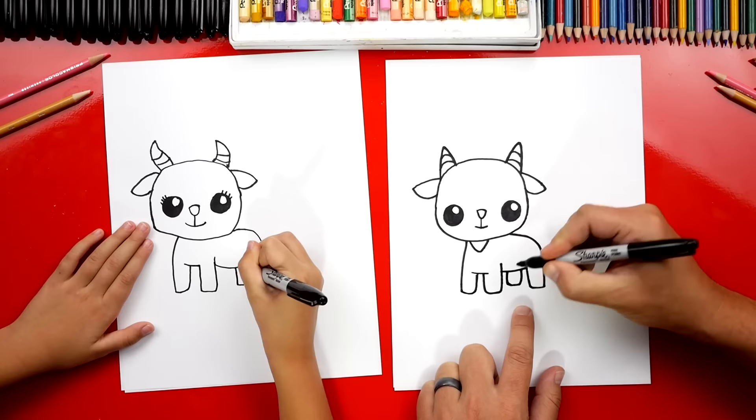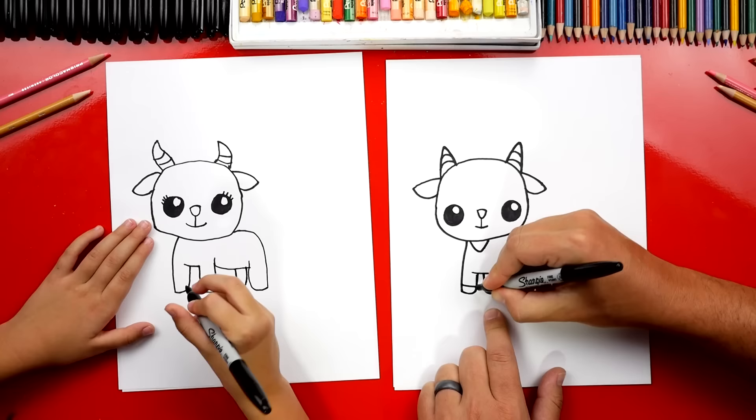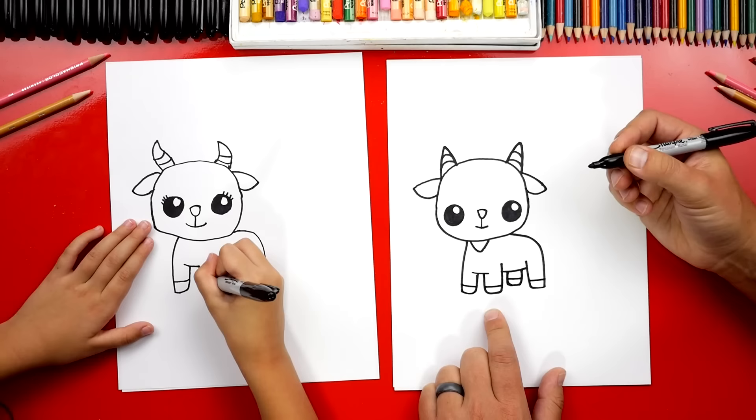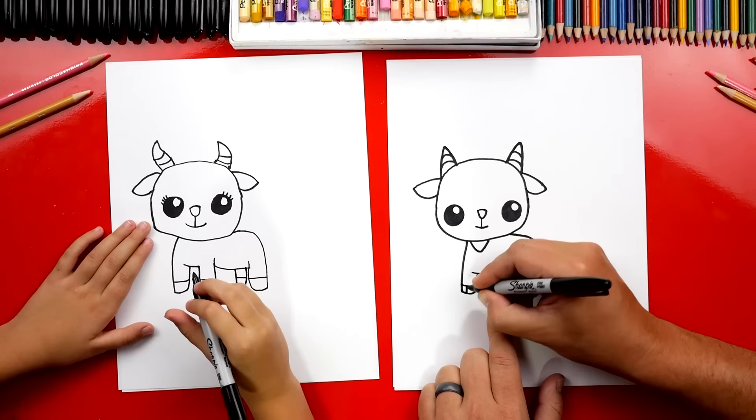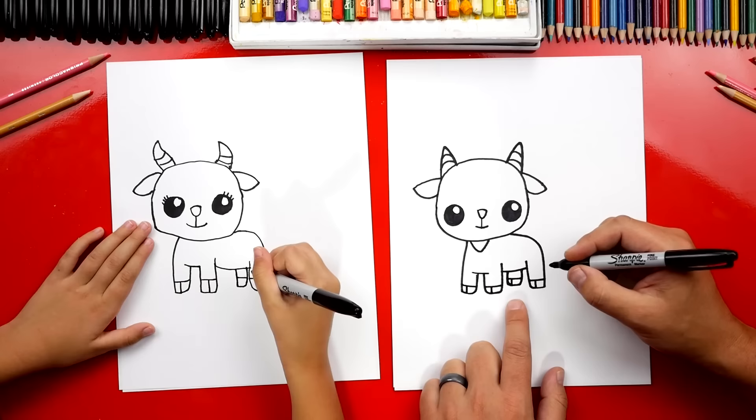Good. Now at the bottom of each leg, let's draw his hooves. We're gonna draw a curve at the very bottom of each leg. Then we're gonna draw another line on the front of each foot. So I'm drawing that a little more towards the left and that's okay. You're drawing it right in the middle. It's perfect. I like it.